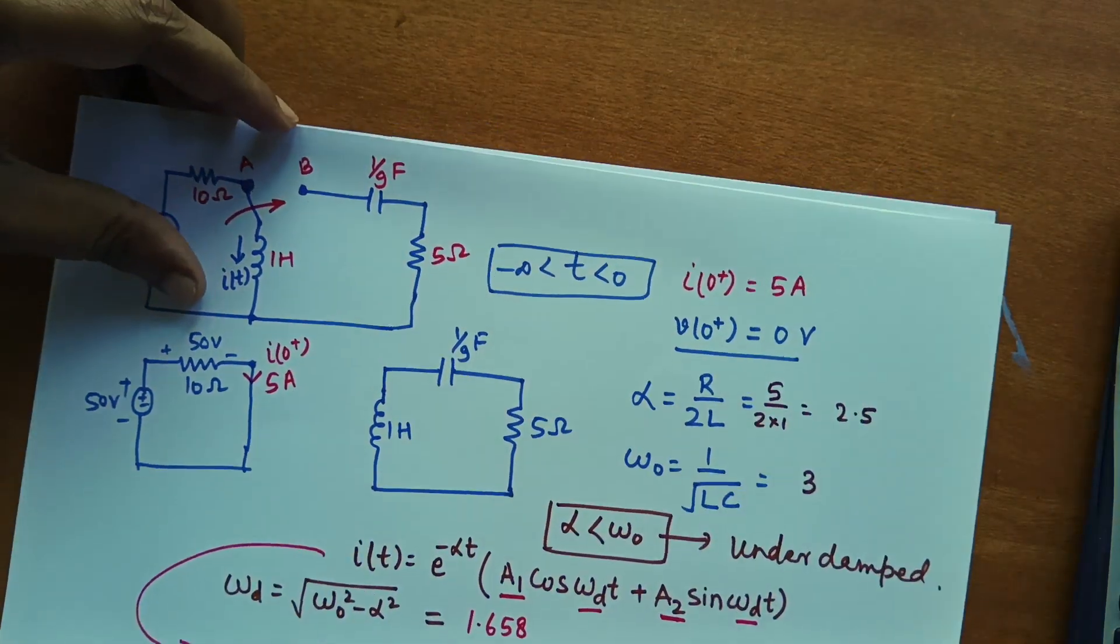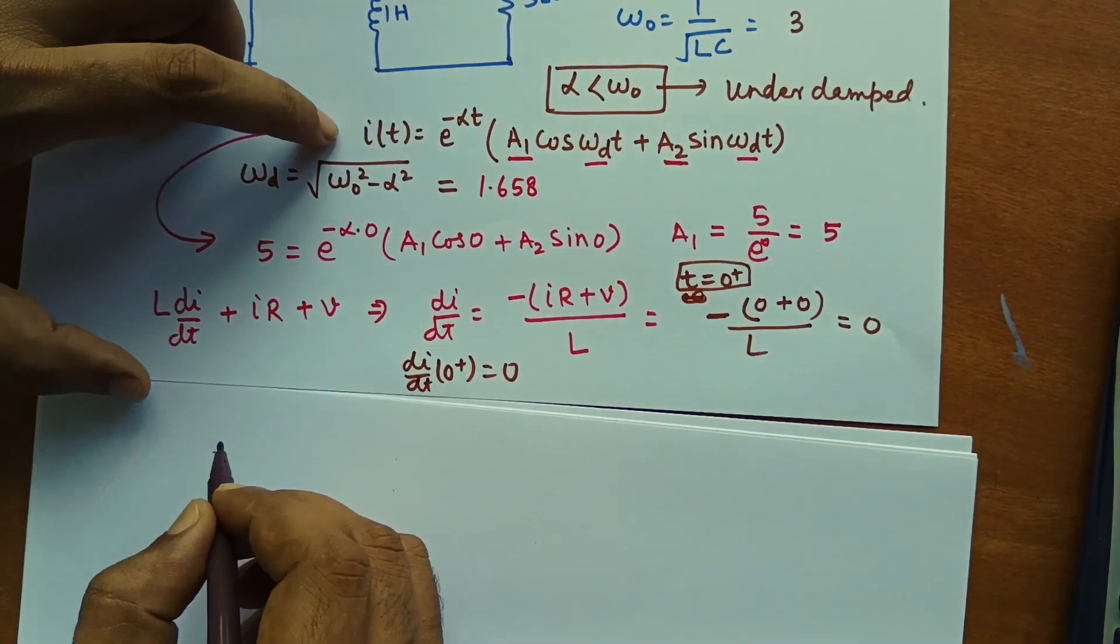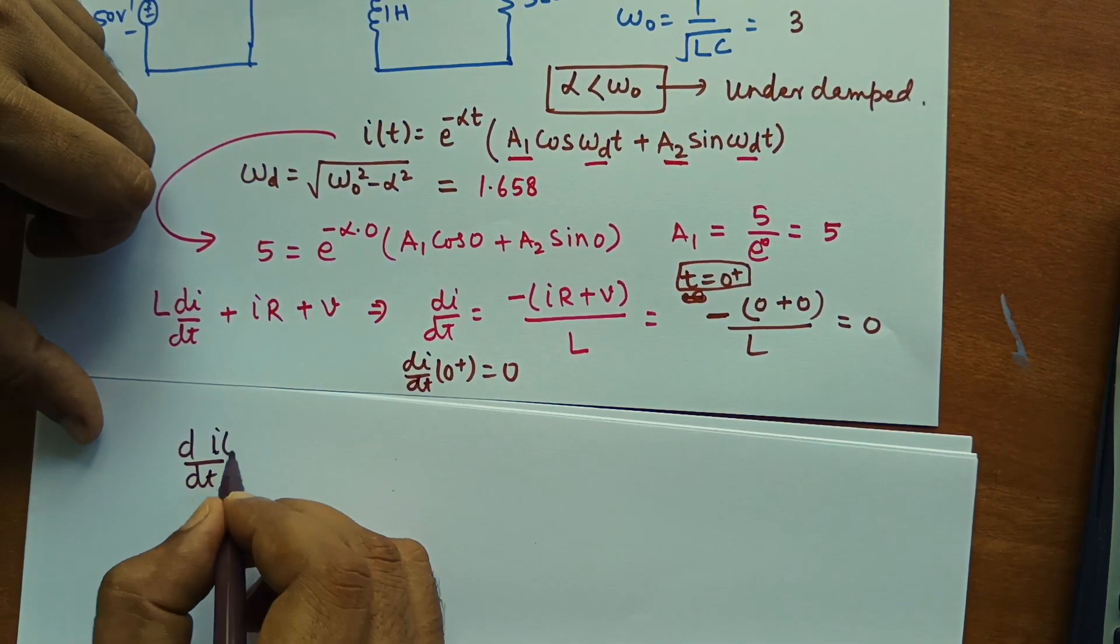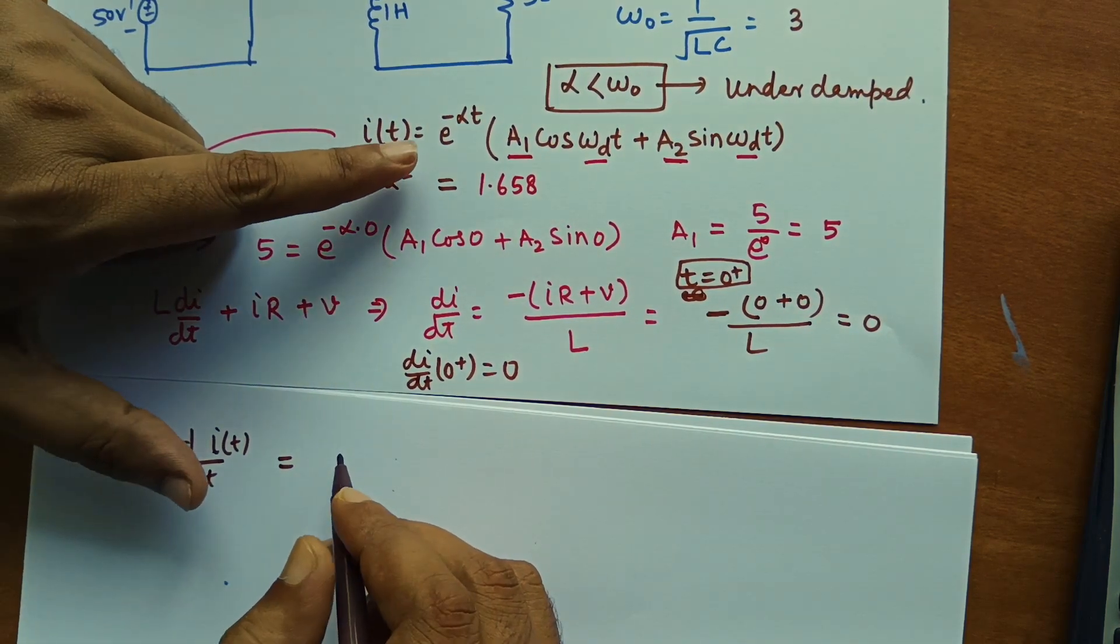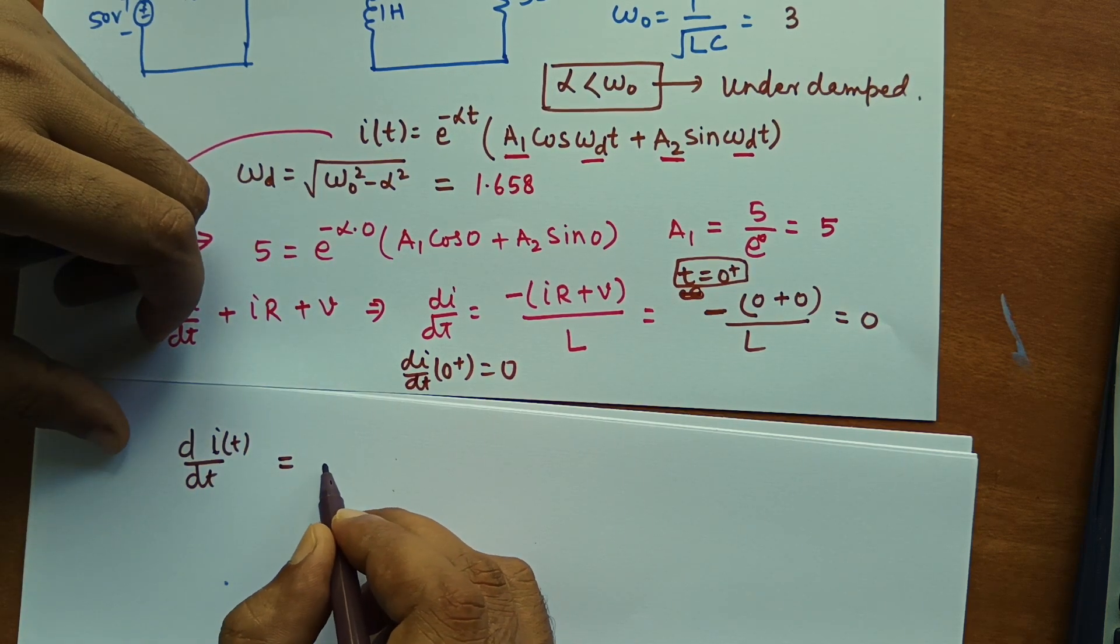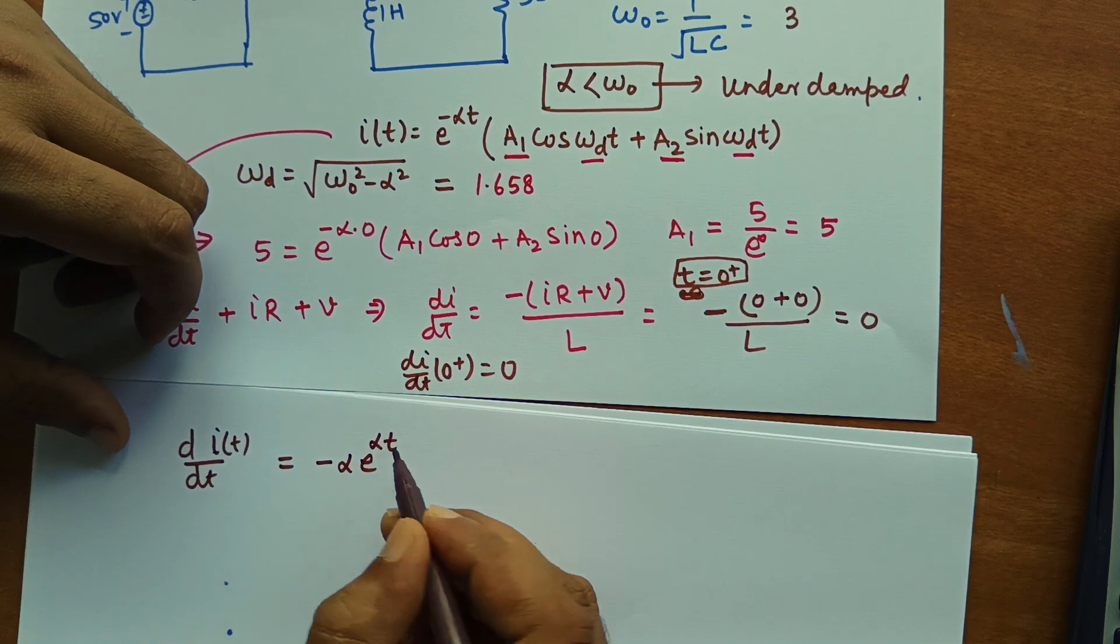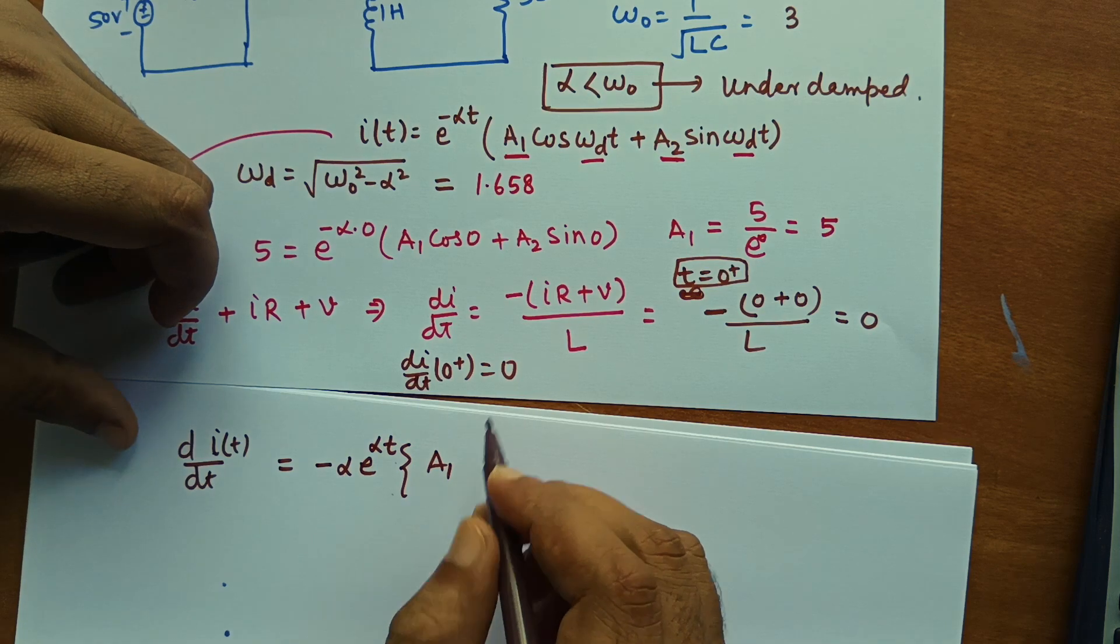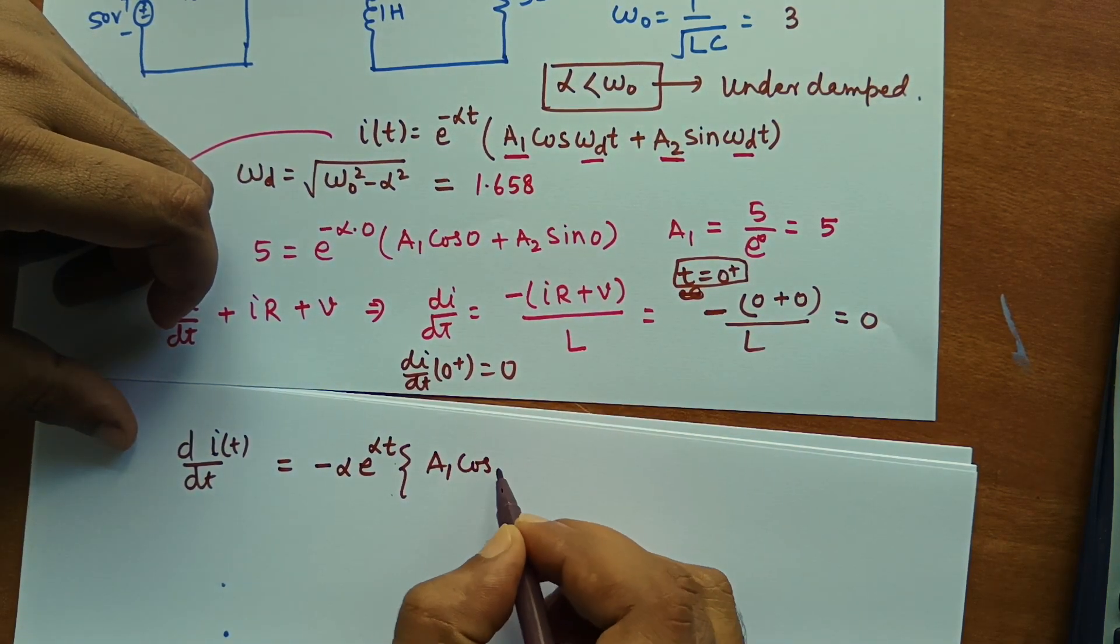Now let us apply this condition in the differentiation of this IT function. So IT is Di by dt of IT will be equal to e to the power minus alpha t is there. So we can take minus alpha into e to the power minus alpha t. To this function that time this will remain constant. u dv and v du a1 cos.